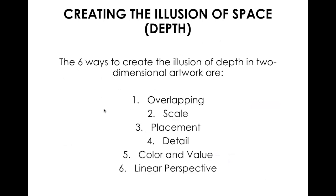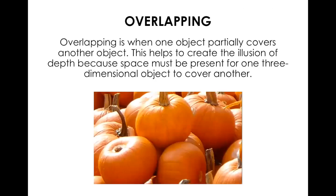When creating space in an artwork, there are six different ways that you can show this. The first is overlapping, the second is scale, the third is placement, the fourth is detail, the fifth is color and value, and the sixth is called linear perspective. We're going to talk about each of those.